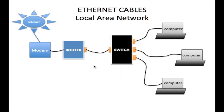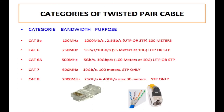This is a local area network, connected with Ethernet cables. Each cable — whether connecting a modem to a router, router to switch, or switch to PCs — can only be a maximum of 100 meters in length. The maximum length of any Ethernet cable within a local area network is 100 meters.